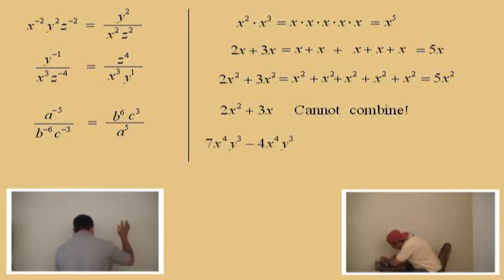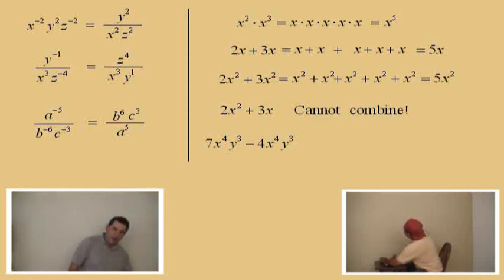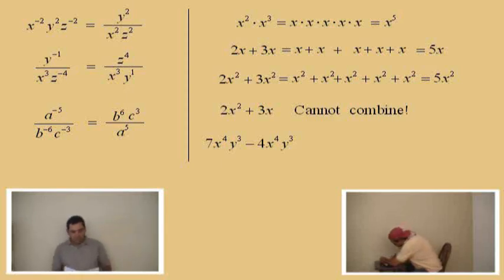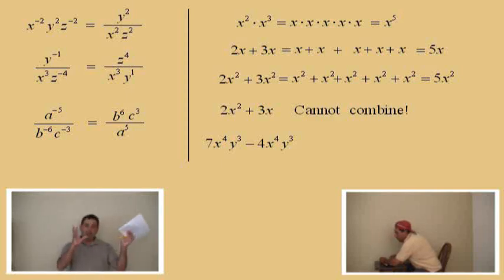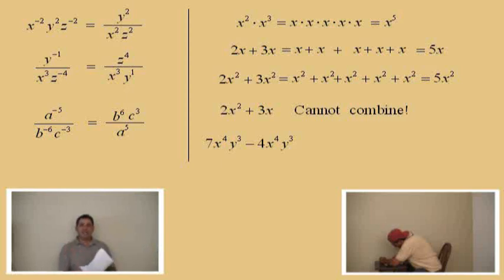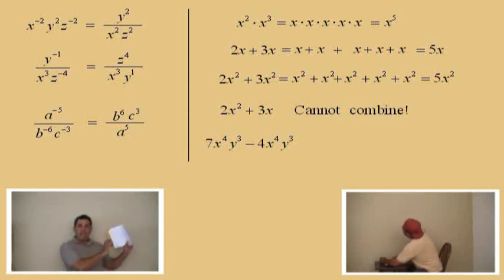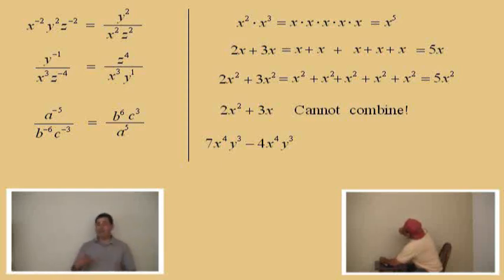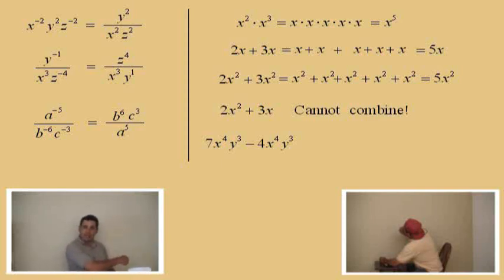7x to the fourth y cubed minus 4x to the fourth y cubed. Now Charlie, are these like terms? Yes they are. Very nice. When you are looking for like terms, take the coefficients and set them aside in your mind and make sure everything else matches up. Notice we have x to the fourth y cubed and the next one is also x to the fourth y cubed.